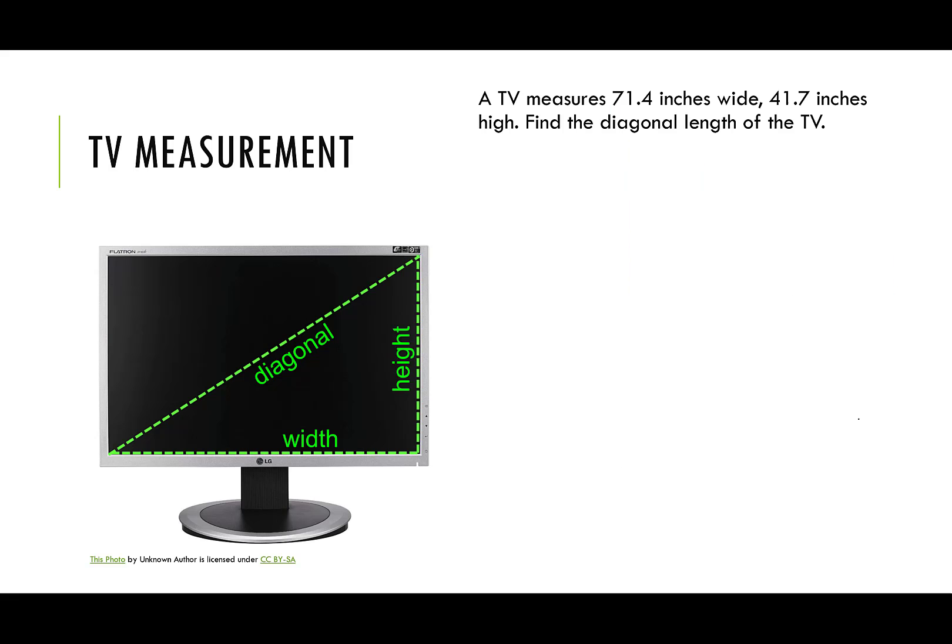One last application. Let's look at a TV. Say a TV measures 71.4 inches wide and 41.7 inches high. Find the diagonal length of the TV. So we know when people say, how big is your TV? That we usually give one measurement and that measurement is the diagonal. So here what we want to be able to do is take this TV that we have the measurements of and say, how would we express this to somebody else? Is this a 65 inch TV? Is it a 55 inch TV? Like what size TV do we have?